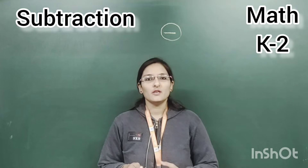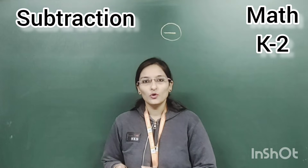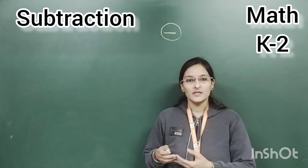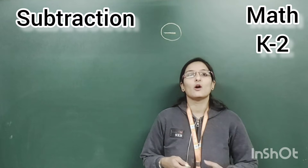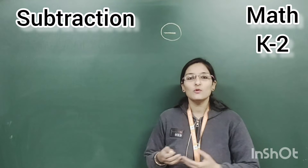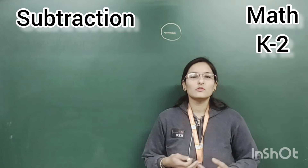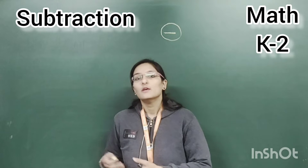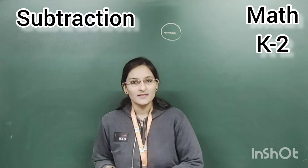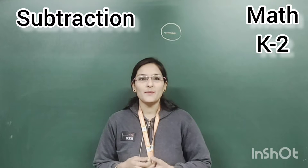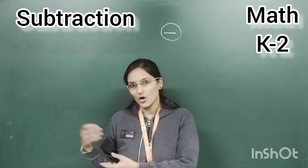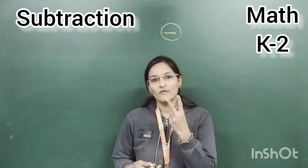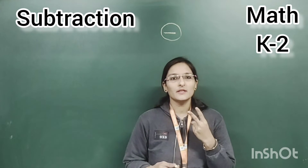Subtraction means to take away from a group or from a number. If we are taking out something from a number or from a group, that will be in reduced form — it will be less. For example, if we have three pencils here and we take one away, we have only two pencils remaining. Got it?